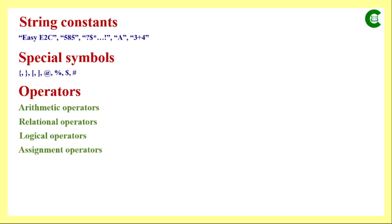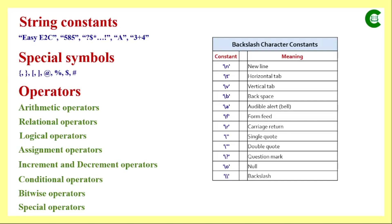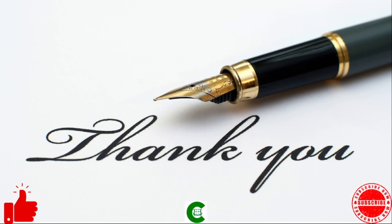The last C token type is operators. Under operators we have different types: arithmetic, relational, logical, assignment, increment and decrement, conditional, bitwise, and special operators. I will discuss all these operators in a separate future class. Additionally, there is a list of backslash character constants that we sometimes use, such as newline, horizontal tab, and backspace. These constants are mainly used in output functions. That's all about today's class — see you in the next class, thank you.